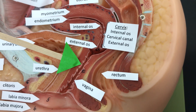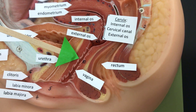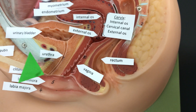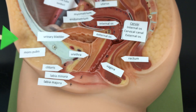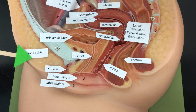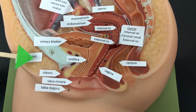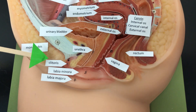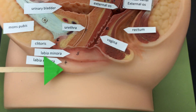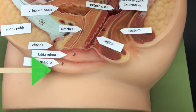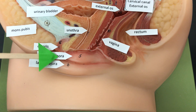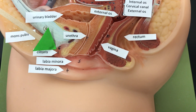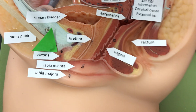The vagina is going to connect the uterus to the outside of the body. The external genitalia include the mons pubis, which is a fat pad that's going to protect the pubic bone. We have the labia majora and the labia minora, and then we have the erectile tissue of the female called the clitoris.